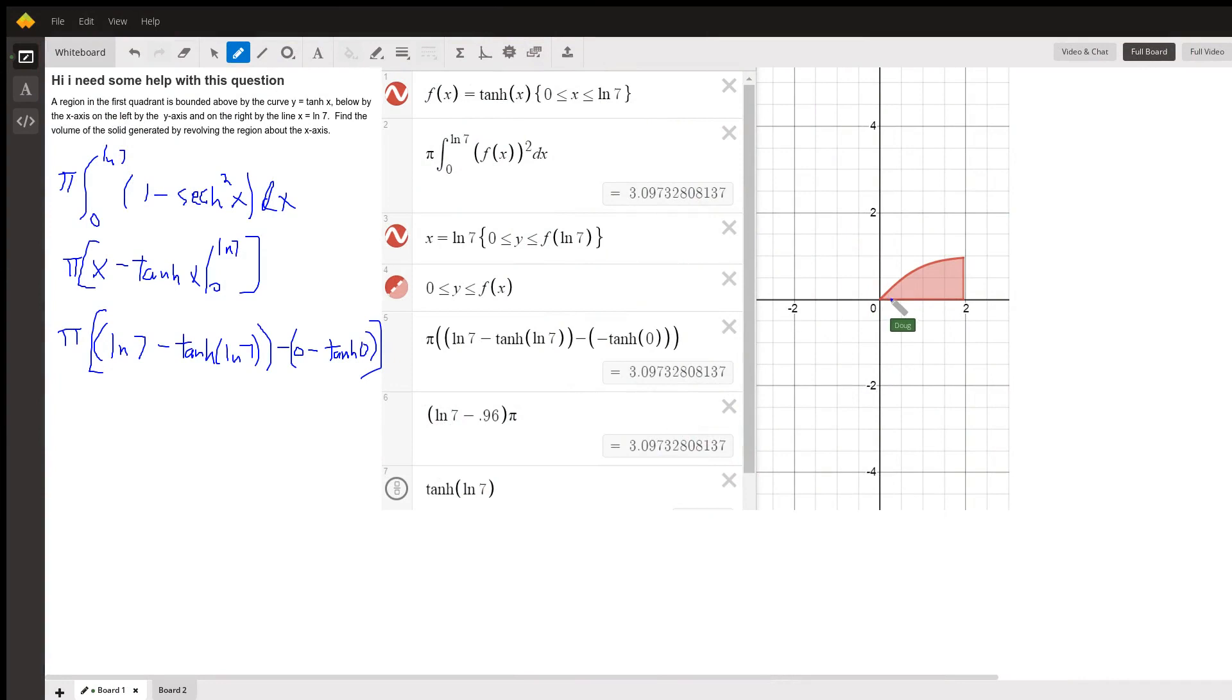Here's a graph of the hyperbolic tangent of x on the interval from 0 to the natural log of 7. To revolve this region about the x-axis, we would want to use this method right here, pi times the typical radius squared.